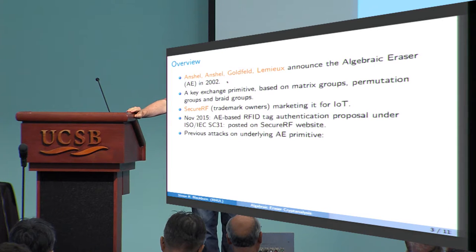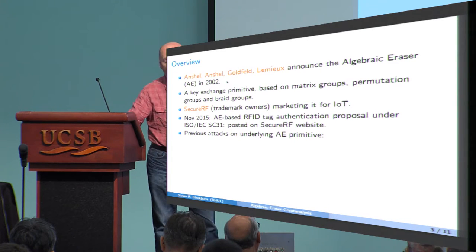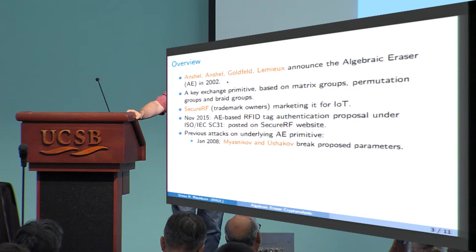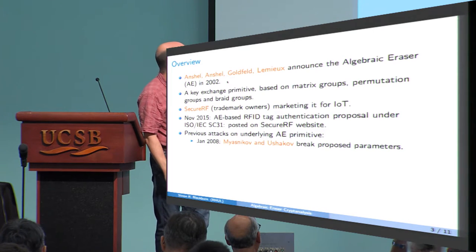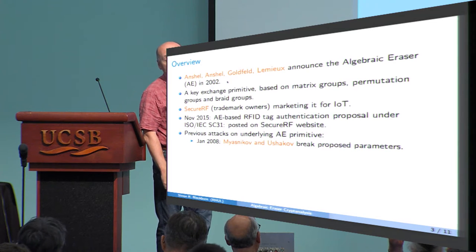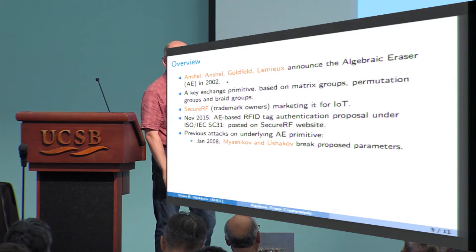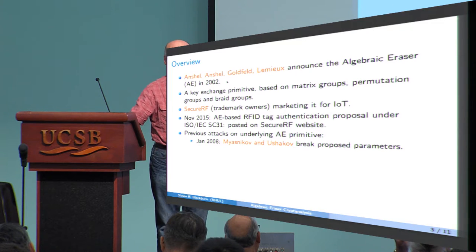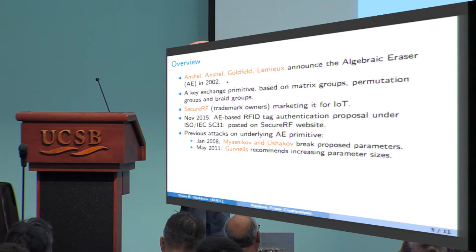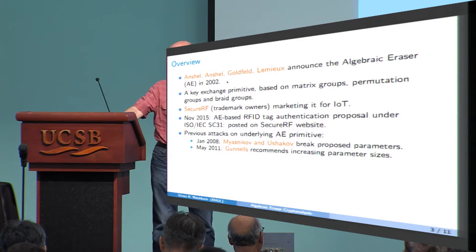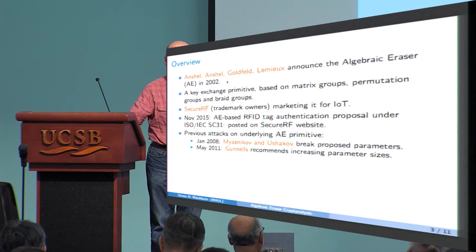So this protocol has had earlier attacks on it. In particular, in 2008, there was an attack by Meaznikov and Ushakov, using something called a length-based attack, which broke the parameters which were originally proposed in the paper. This basically says that the parameters are too small, because this length-based attack scales very badly. In fact, Gunnels recommended just increasing the parameter sizes slightly, and that would avoid this attack. So it's not a particularly serious attack, because there's an easy remedy.